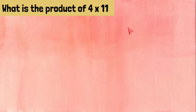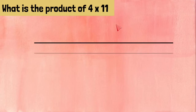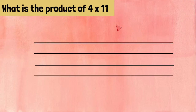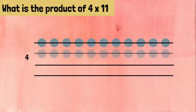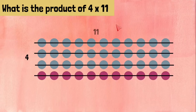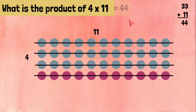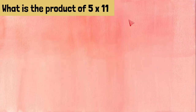4 times 11 means four rows with 11 counters on each of the four rows. Now we can do 33 — the blue ones — and add 11 more, which gives us 44.